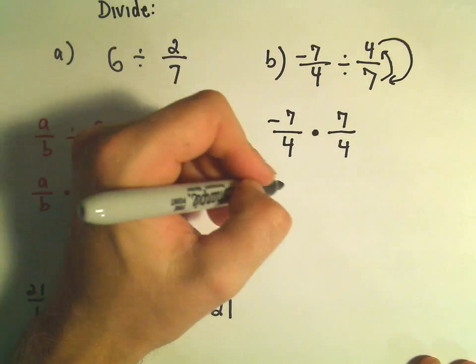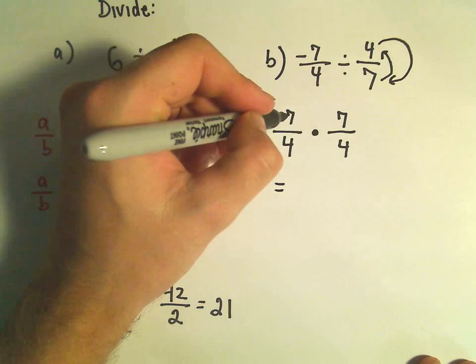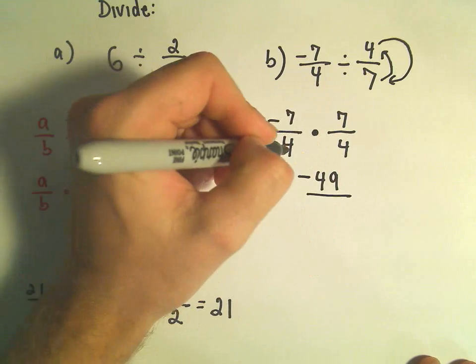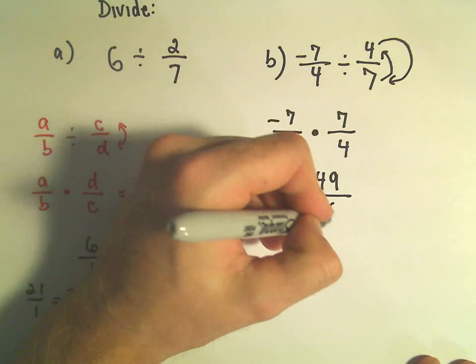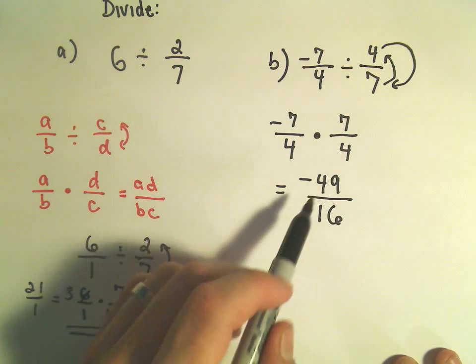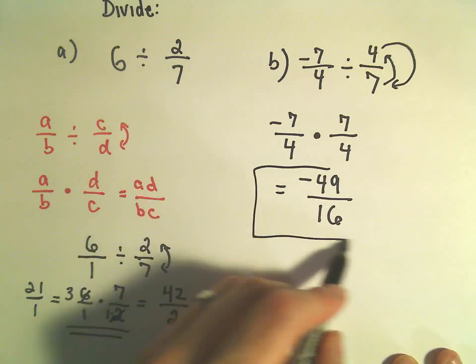And again, now I just multiply the numbers on top. So I have negative 7 times positive 7. That will give me a negative 49. And then 4 times 4 is 16. And in this case, nothing will cancel out or reduce. So this would be our final answer.